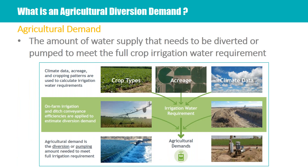What is an agricultural diversion demand? We defined it as the amount of water supply that needs to be diverted or pumped to meet the full crop irrigation water requirement — basically the amount of water at the head gate and at the well that you would need to divert or pump, regardless of physical and legal availability. So if everybody lives in a perfect world, how much water would you need? That is our basis — what is the demand that we are trying to meet?